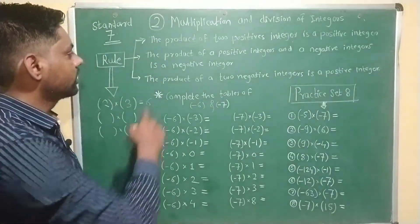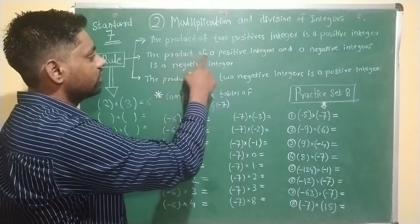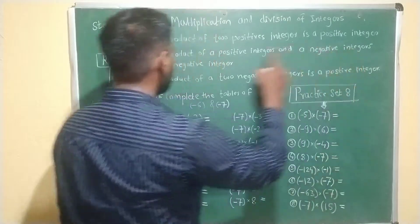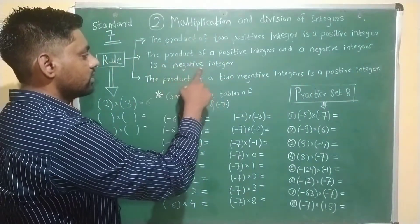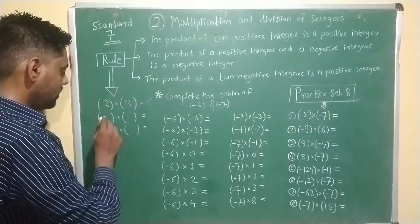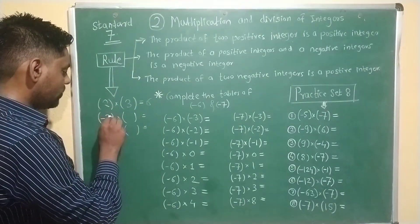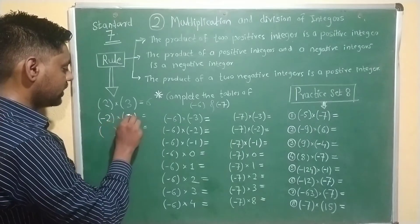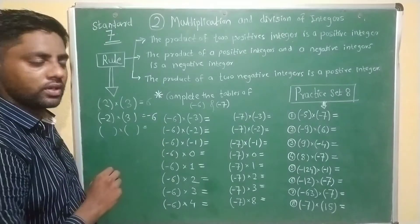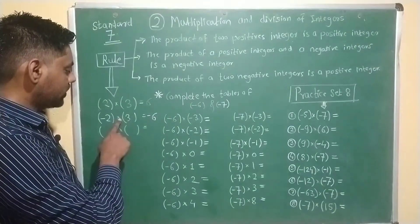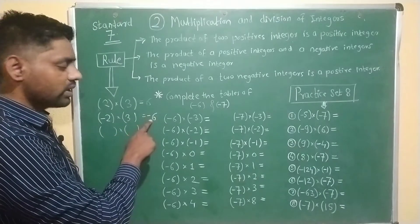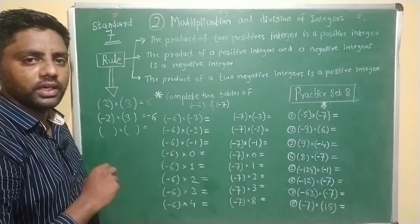Next rule: the product of a positive integer and a negative integer is a negative integer. Let us take one more example. Minus 2 multiplied by 3 is equal to minus 6. The product of a negative integer and a positive integer always becomes a negative integer.